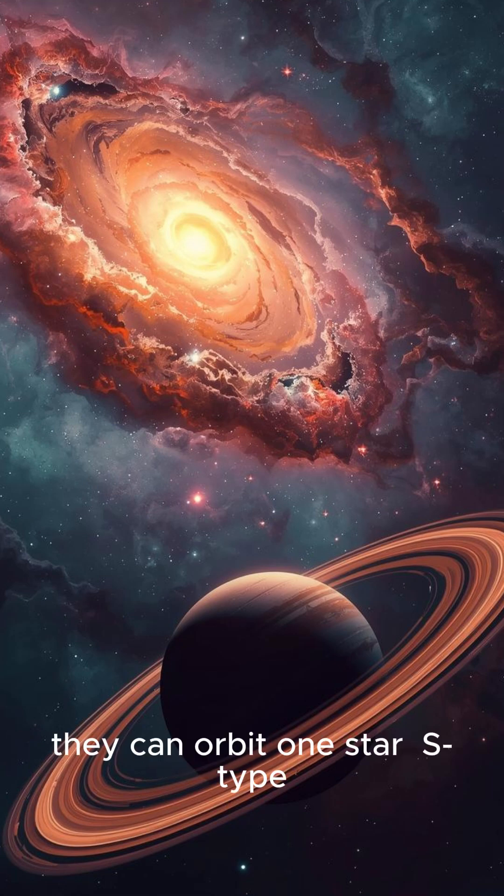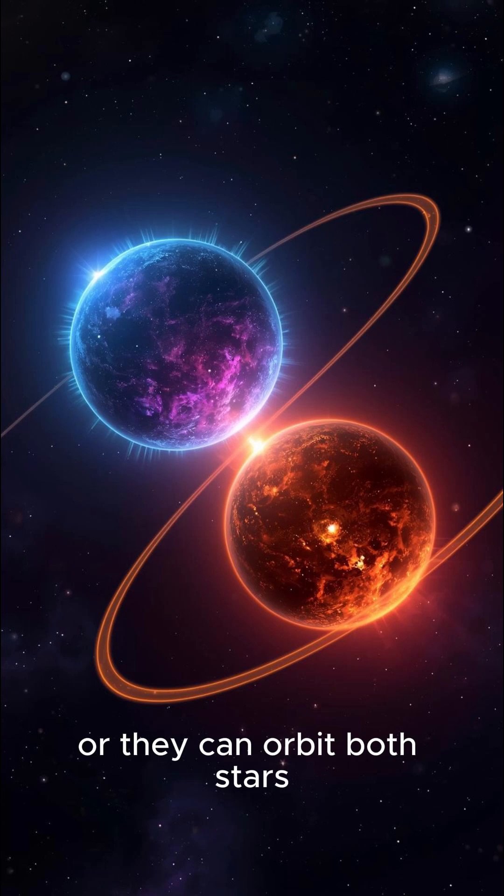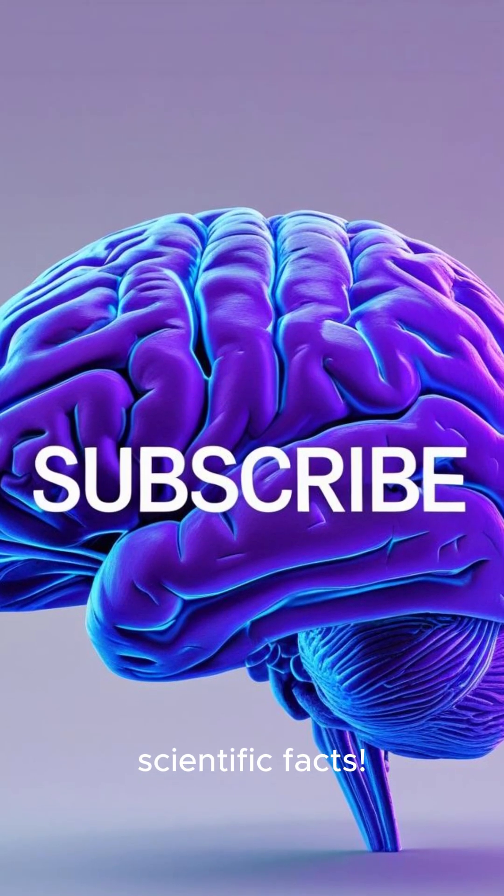Last, planets in these systems can have two types of orbit. They can orbit one star (S-type), or they can orbit both stars (P-type), leading to a real-life Tatooine effect. Subscribe to decode more incredible scientific facts.